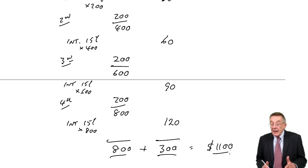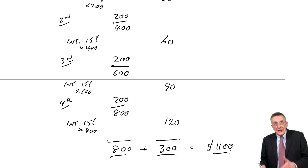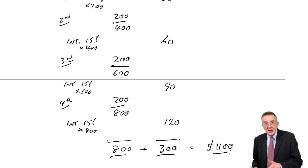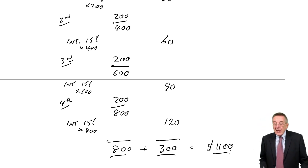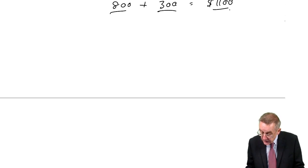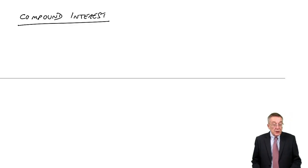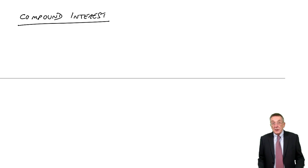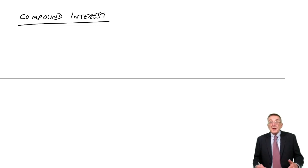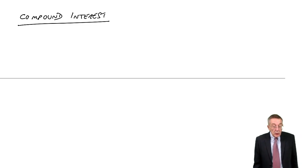Generally we're talking about what we call compound interest, where the interest itself earns interest in later years. This is much more important. With compound interest, the interest increases the amount on deposit and so we earn more interest in later years. Look at example two.